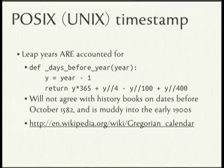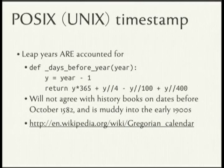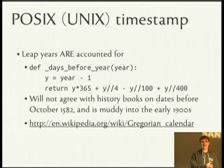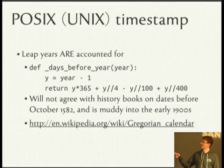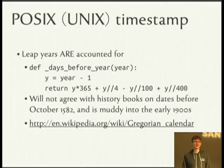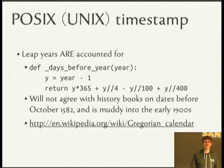POSIX does take into account leap years according to the Gregorian calendar, where every fourth year is a leap year, every hundredth year is not, unless it's also divisible by 400. The year 2000 was a leap year; the year 1900 was not; the year 2100 will not be. Any dates before October 1582 don't work with POSIX timestamp styles. If you want to look back in time using this formula, that's called the proleptic Gregorian calendar. A number of countries didn't adopt the Gregorian calendar well into the 1900s — Turkey adopted it in 1926.